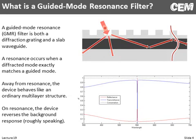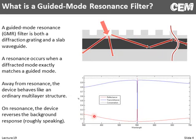Under very special circumstances, one of these diffracted modes matches exactly a guided mode, and we can couple energy from the external wave into a guided mode. When that happens, we establish this magical thing called a Guided Mode Resonance. When this isn't the case and we're not diffracting into a guided mode, the wave really just sees this as a multi-layer structure like you'd calculate with the Transfer Matrix Method, and we get this background response.